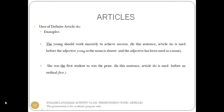Uses of definite article the — examples. 'The young should work sincerely to achieve success.' In this sentence, article the is used before the adjective young, as the noun is absent and the adjective has been used as a noun. 'She was the first student to win the prize.' In this sentence, article the is used before an ordinal, i.e. first.